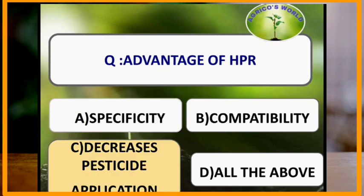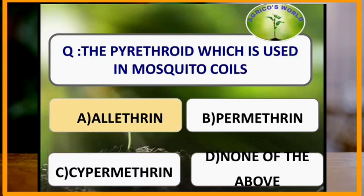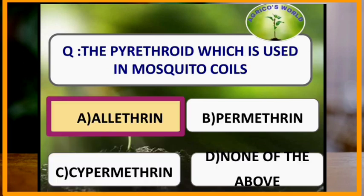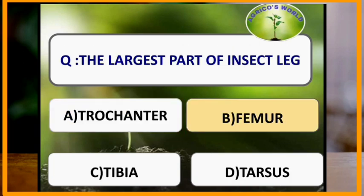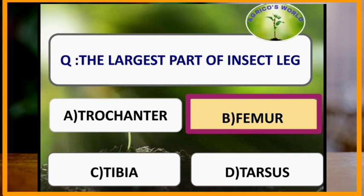The advantage of host plant resistance is that it decreases pesticide application. The pyrethroid used in mosquito coils is allethrin. The largest part of the insect leg is the femur.